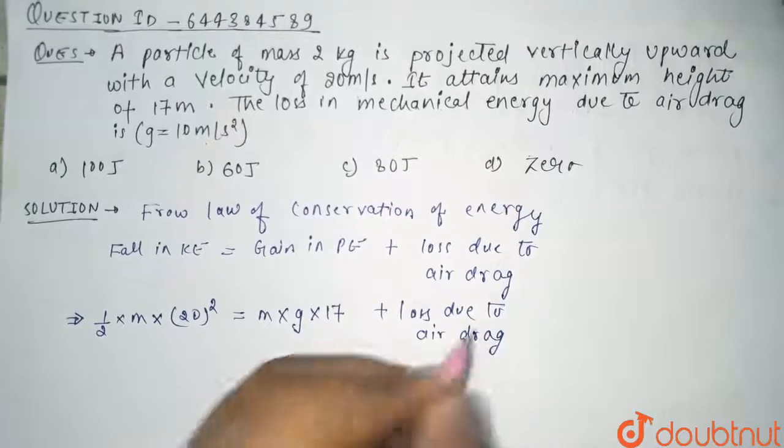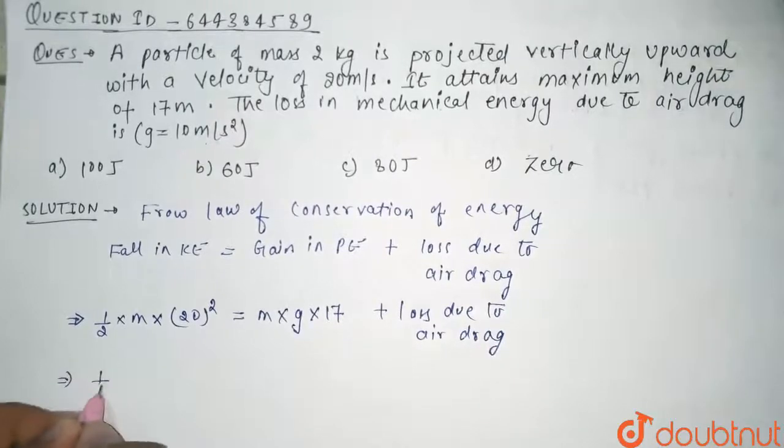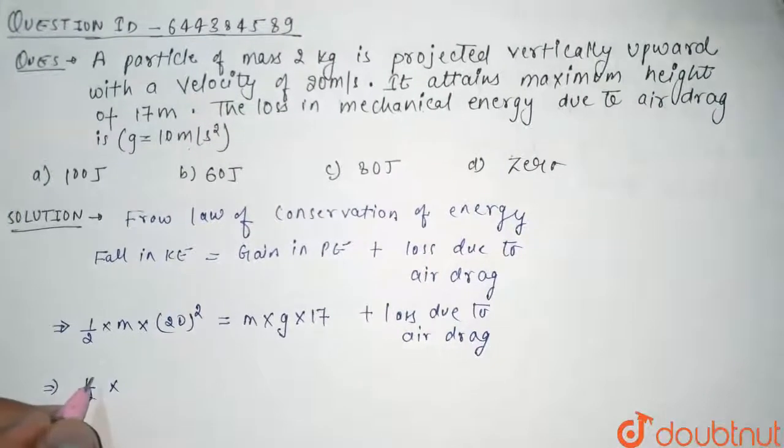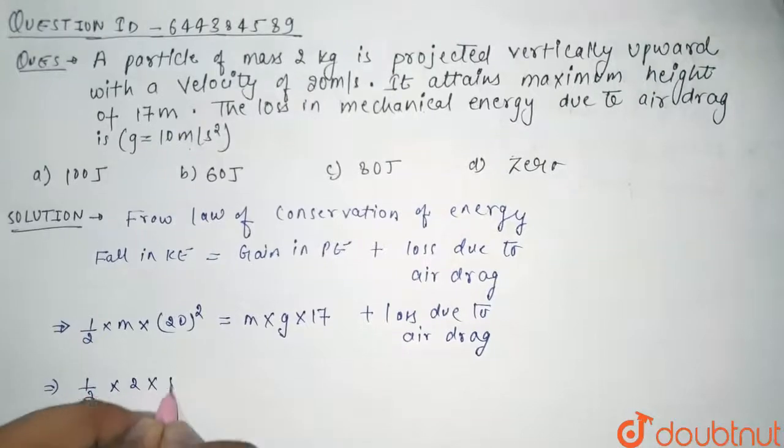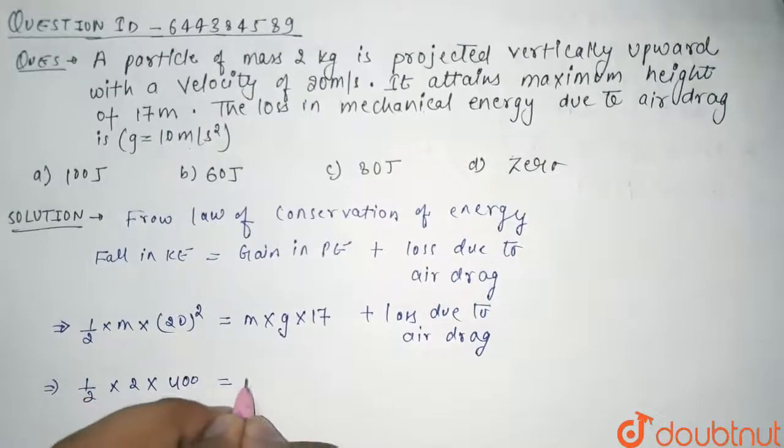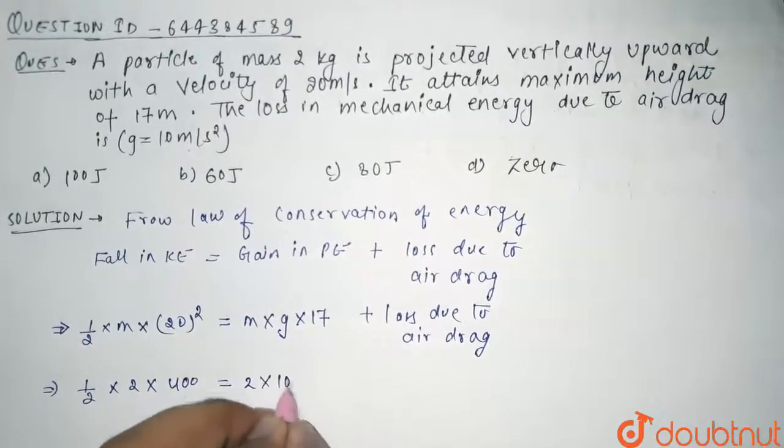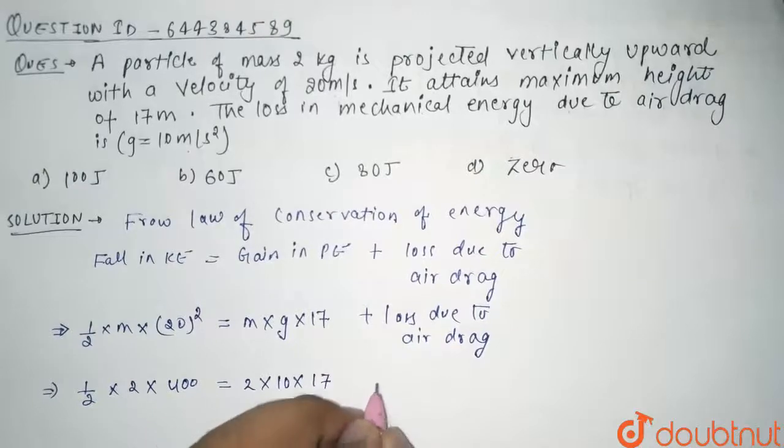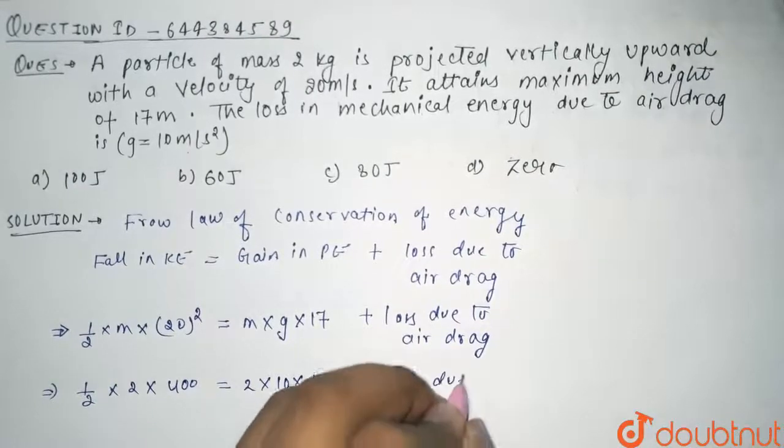So from here it comes out to be half into m, that is mass of the particle that is 2, into 400 equals 2 into 10 into 17 plus loss due to air drag.